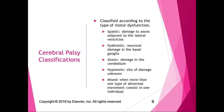CP classifications are based on the type of motor dysfunction, which depends on the area of the brain affected. Spastic CP involves damage to axons adjacent to the lateral ventricles where cerebrospinal fluid is formed, and it causes spasticity. Dyskinetic CP involves neural damage in the basal ganglia and midbrain, causing movement problems. Ataxic CP involves damage in the cerebellum, causing discoordination. Hypotonic CP has an unknown damage site but causes low tone and difficulty controlling the trunk. Mixed CP is when more than one type of abnormal movement coexists in one individual.